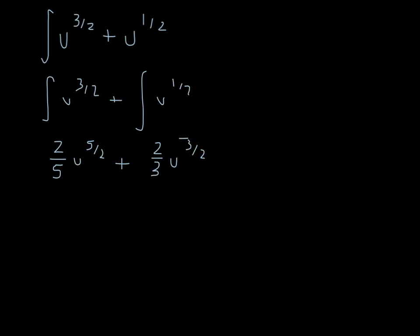And from here, we can plug our u back in, which we had above was u equals x minus 1. And let's plug that back in. So we get 2 fifths x minus 1 to the 5 halves plus 2 thirds x minus 1 to the 3 halves.